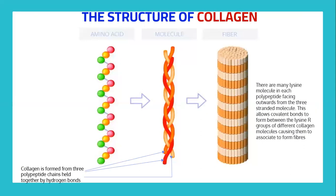These are what was explained in the previous slide. In the diagram, collagen is formed from three polypeptide chains held together by hydrogen bonds, forming a molecule. From the amino acid level, it changes to the molecule level where three polypeptide chains are held by hydrogen bonds. When the molecule transitions to a fiber, there are many lysine molecules in each polypeptide facing outward from the three-stranded molecule. This allows covalent bonds to form between the lysine R groups of different collagen molecules, causing them to associate and form a fiber.